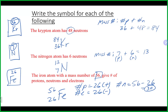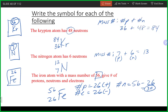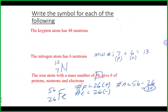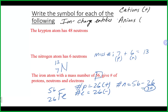Now let's talk about what happens if we have a charge. Anything that has a charge is known as an ion. There are two types of ions: cations, which are positively charged ions, and anions, which are negatively charged ions.